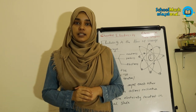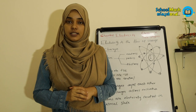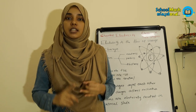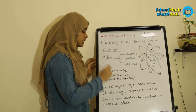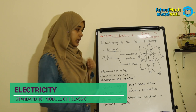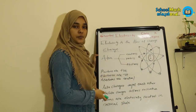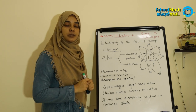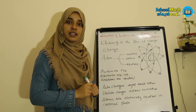In one atom, what particles are there? In one atom, there are neutrons, protons, and electrons. Atoms have a structure called the nucleus. The nucleus contains protons and neutrons.